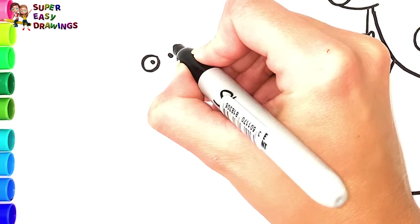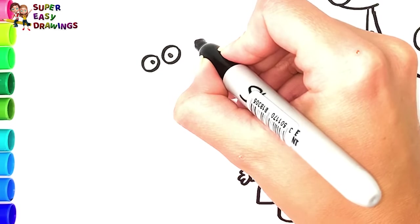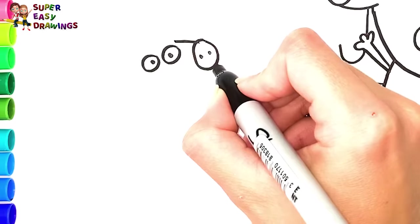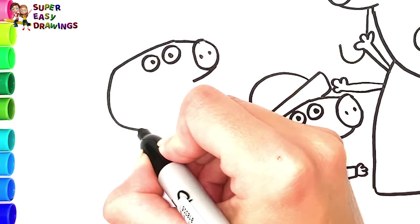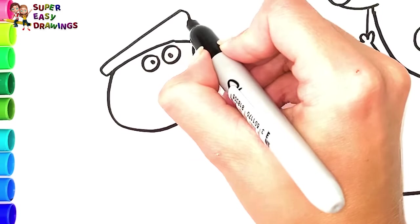Now I draw Peppa Pig's eyes, her nose, and the shape of her head. I draw a rain hat onto her head, too.